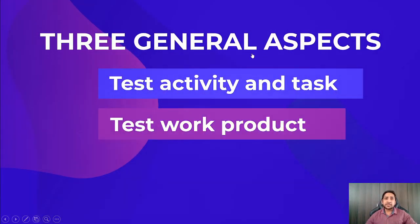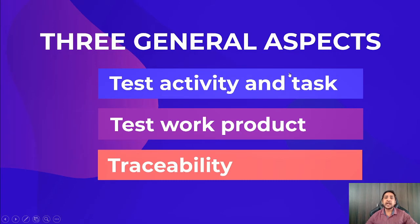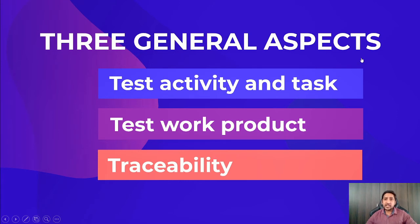In an organization, there are three general aspects of how the test process is implemented: test activity and task, test work product, and traceability. Under the test process we have test activities, under each activity we have different tasks, and when we perform these tasks we get an output referred to as the test work product. Once we have different work products, we need to provide traceability between them so we know which work product belongs to which test process.